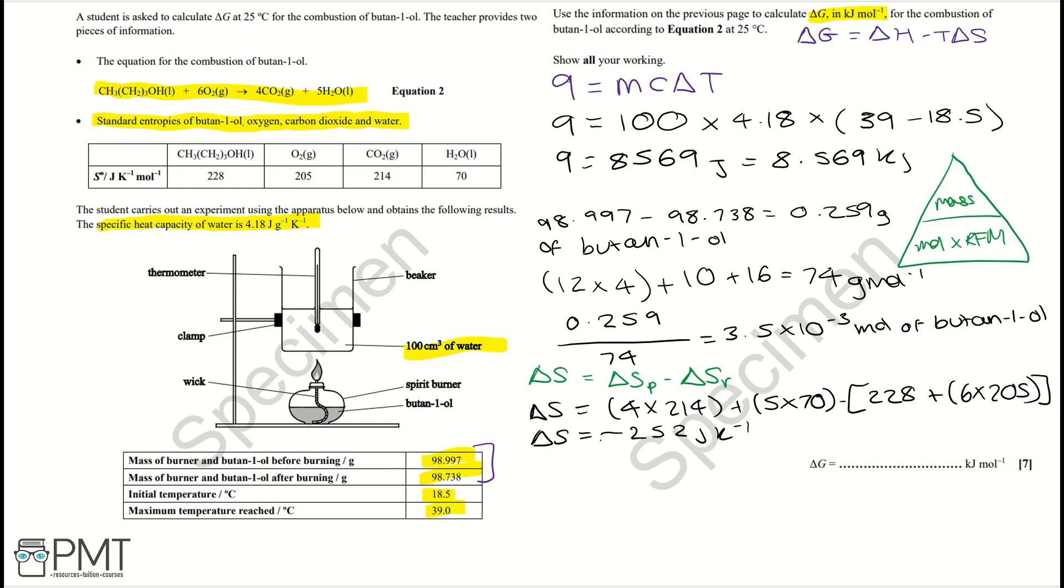Which can then be converted to kilojoules per kelvin per mole. And that would be minus 0.252 kilojoules per kelvin per mole. And now working out delta G with all the information, we need delta H.